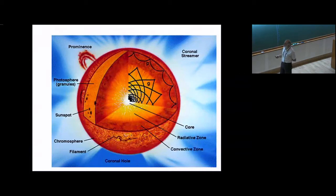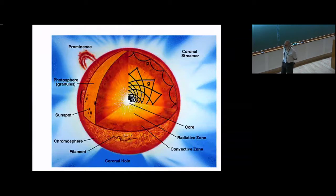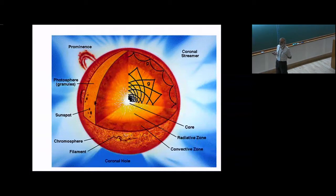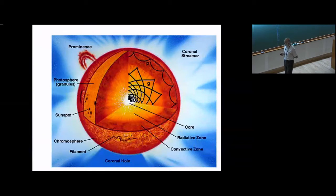The temperature at the surface is about 6000 degrees Kelvin, and it decreases further as you go out to about 4000 degrees. After that, something strange happens: the temperature starts increasing again and reaches a few million degrees Kelvin in the corona. This is the important problem of coronal heating, which we don't fully understand, but I will not be talking about that.